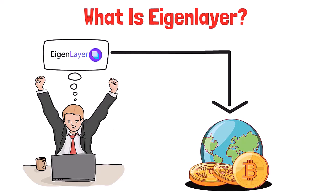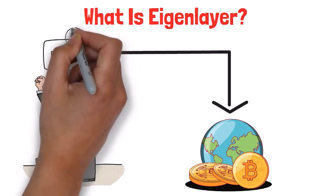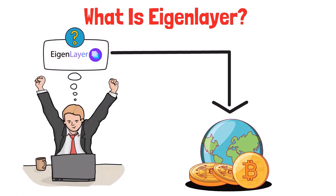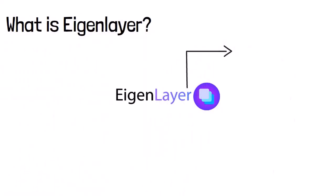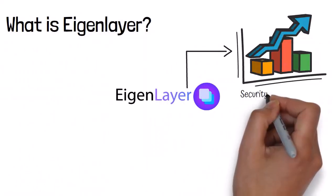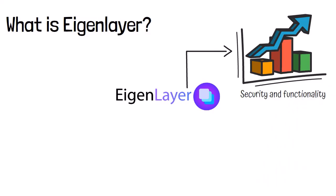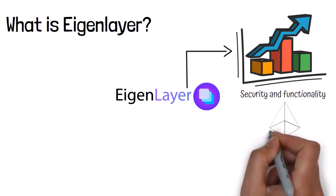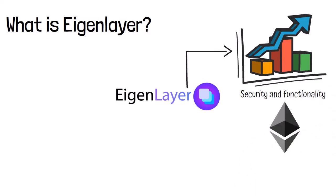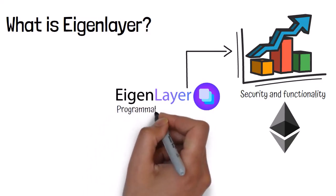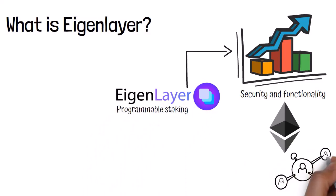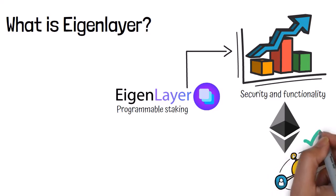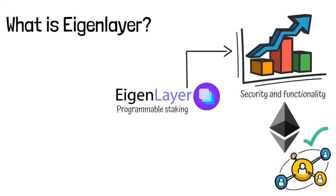Let's do a quick introduction of EigenLayer. EigenLayer is a novel blockchain project that aims to enhance security and functionality across various networks by leveraging the existing Ethereum validator infrastructure. At its core, EigenLayer enables programmable staking, allowing Ethereum validators to secure not just the Ethereum network, but also other blockchains and decentralized services.